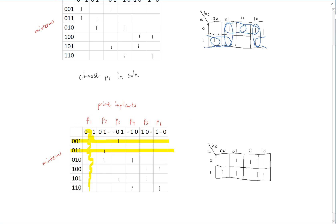On the K-map, that would be right here. This is P1, and you can see that it covers the minterms 001 and 011, just like we expected. So now we simplify our table and get rid of these two rows and this column.